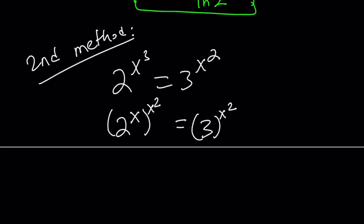If x is equal to 0, you're going to notice that if x is 0, we have 2 to the power 0 to the power 0, and 3 to the power 0. And obviously, they are both equal to 1, therefore, they are equal. So x equals 0 is a valid solution.